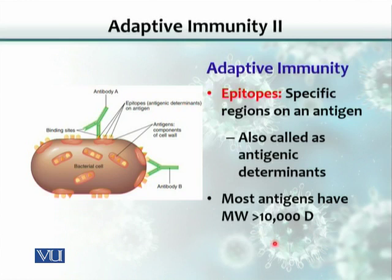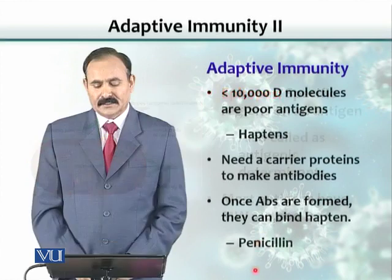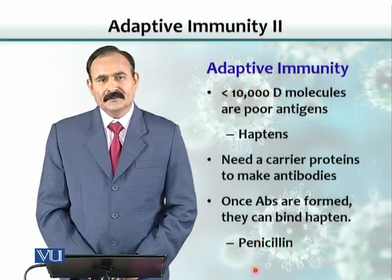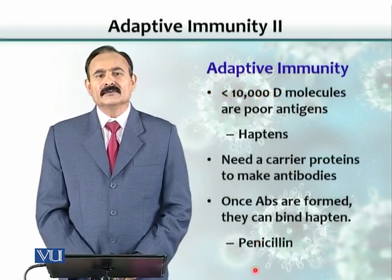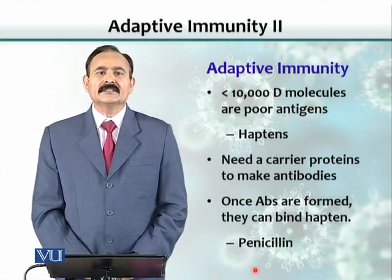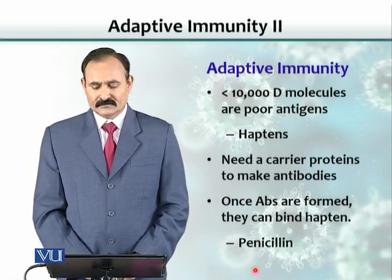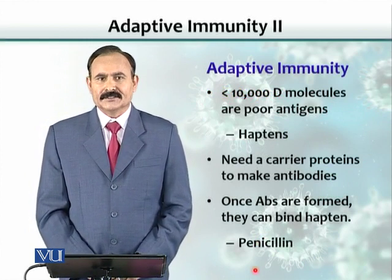It has been found that these antigenic determinants have a minimum molecular weight of about 10,000 Daltons. So if these molecules — these proteins and polysaccharides that are antigens — have at least this much molecular weight, they can act as antigens or immunogens. In other words, if a molecule weighs less than 10,000 Daltons, it will be a poor antigen.